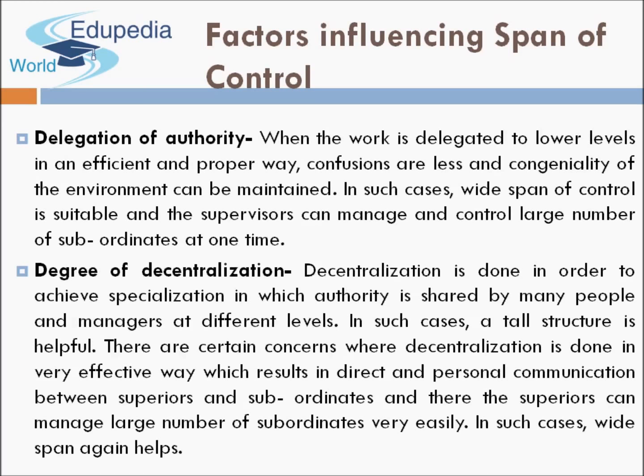Two more factors influencing span of control are delegation of authority and degree of decentralization. When work is delegated efficiently with fewer confusions, the manager can control more people, resulting in a wider span of control. If there is ambiguity in the organization, the manager cannot control more people and the span of control becomes narrow.